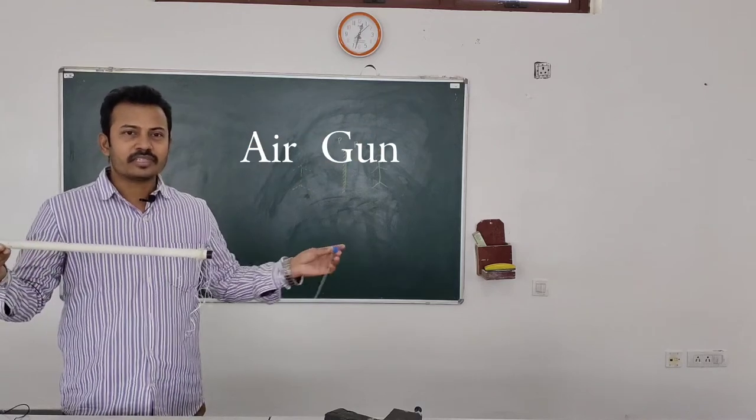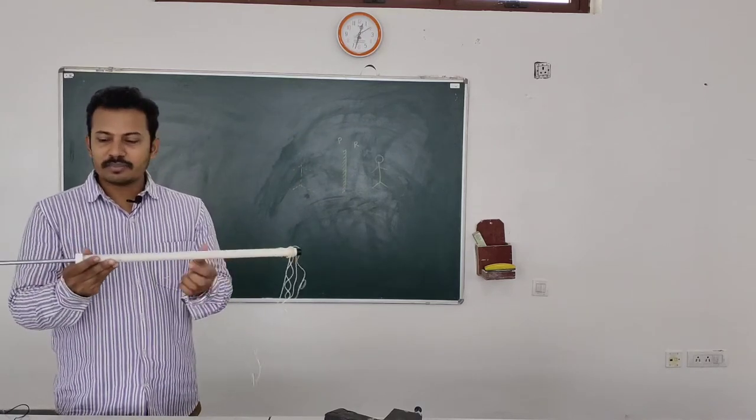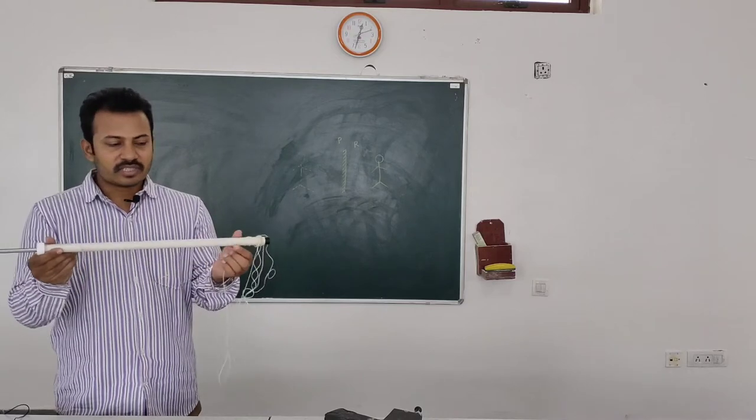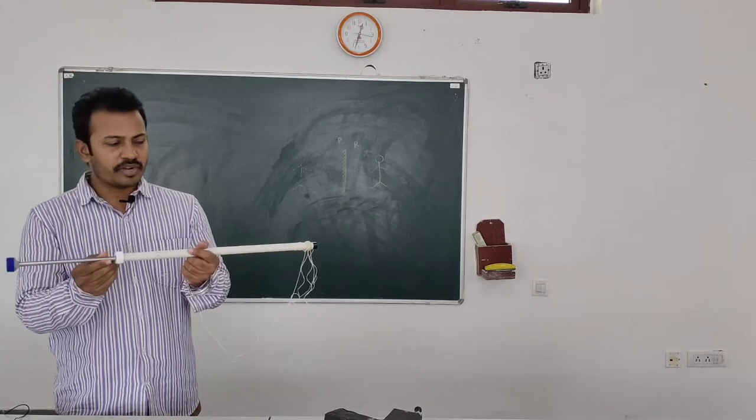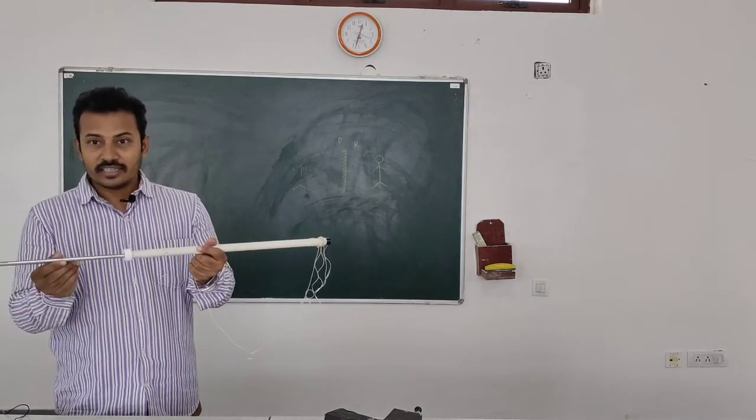This is a simple air power gun which is made up of a PVC pipe. This PVC pipe acts like a barrel here, and there is a metallic rod which can move to and fro in this which will act like a piston.